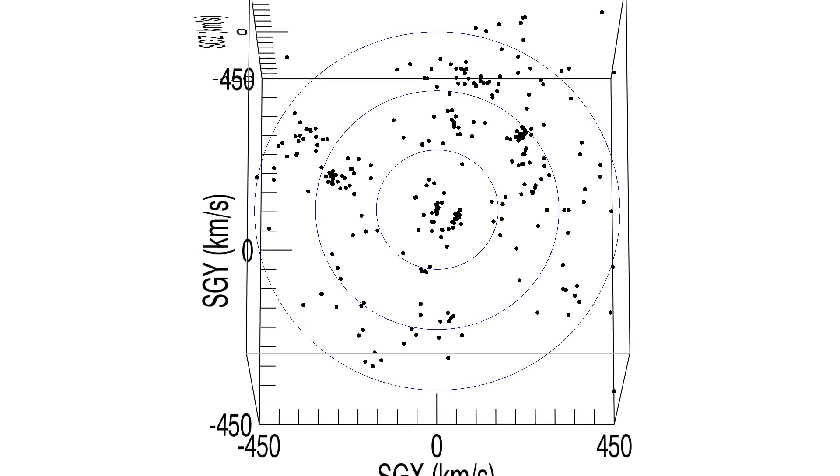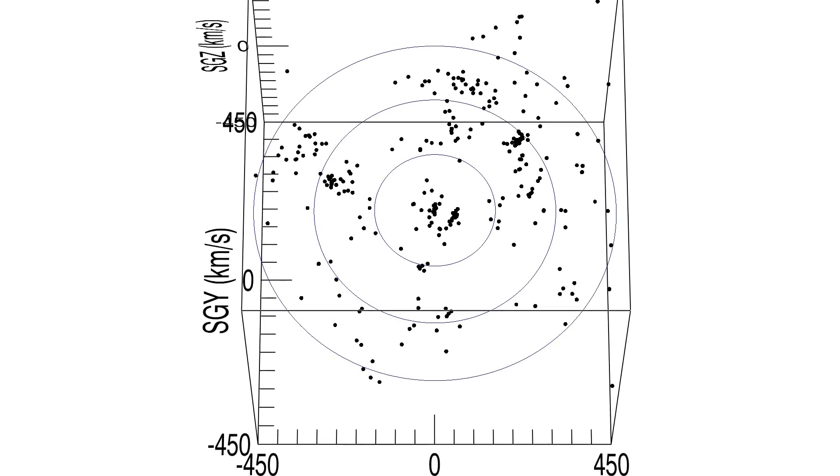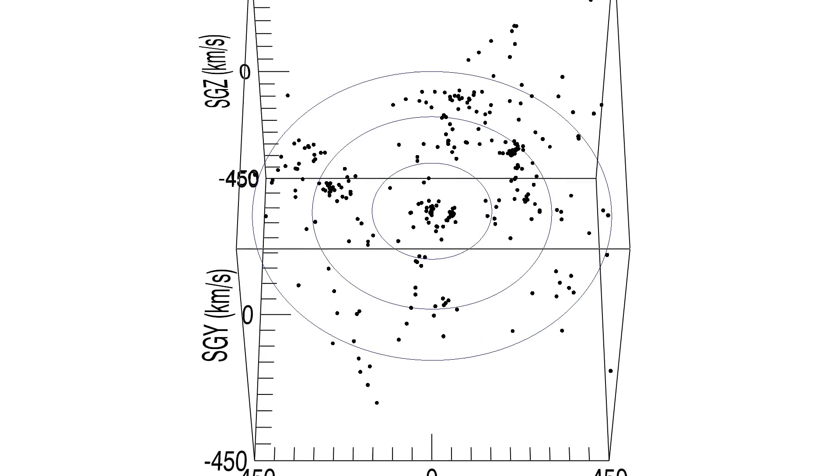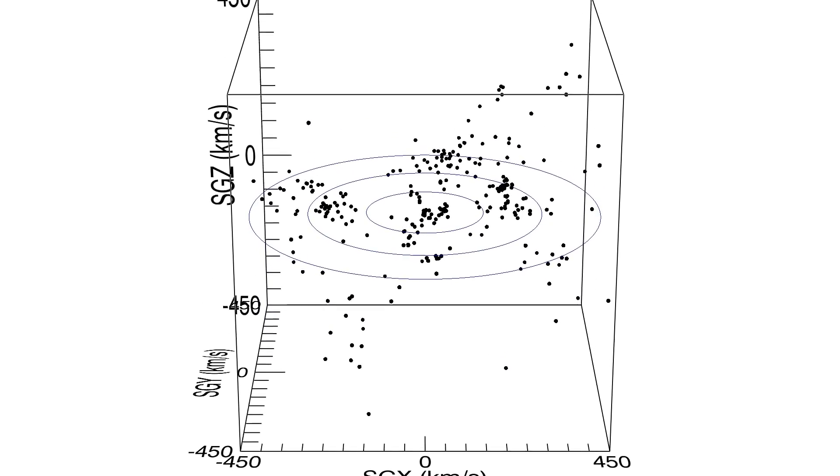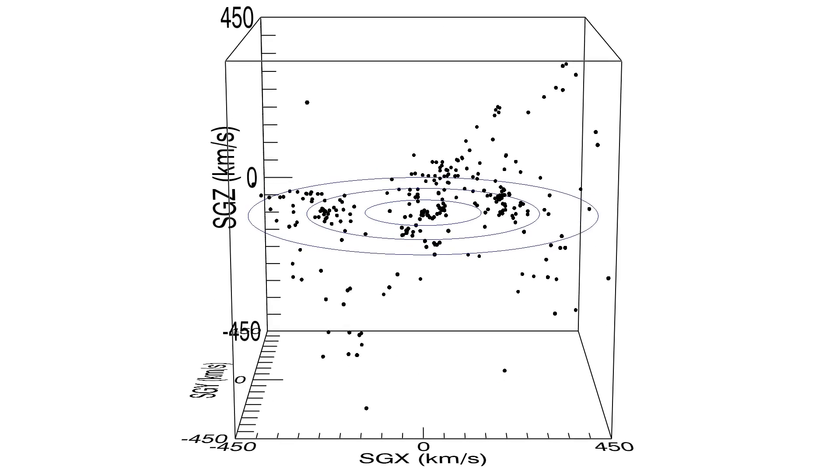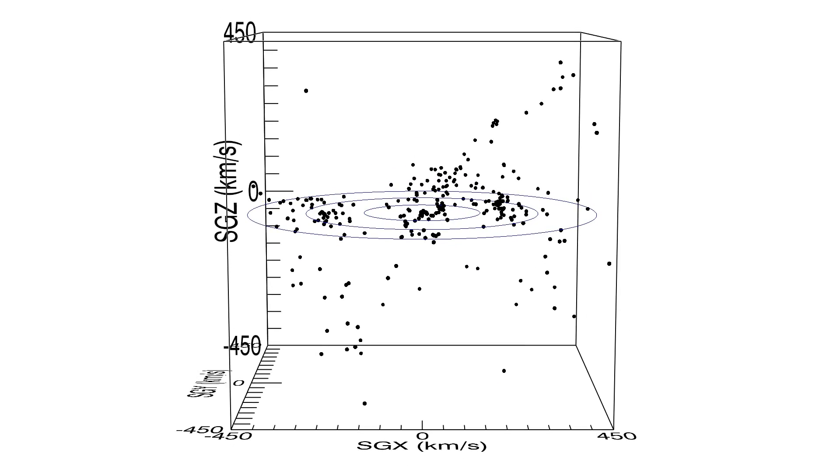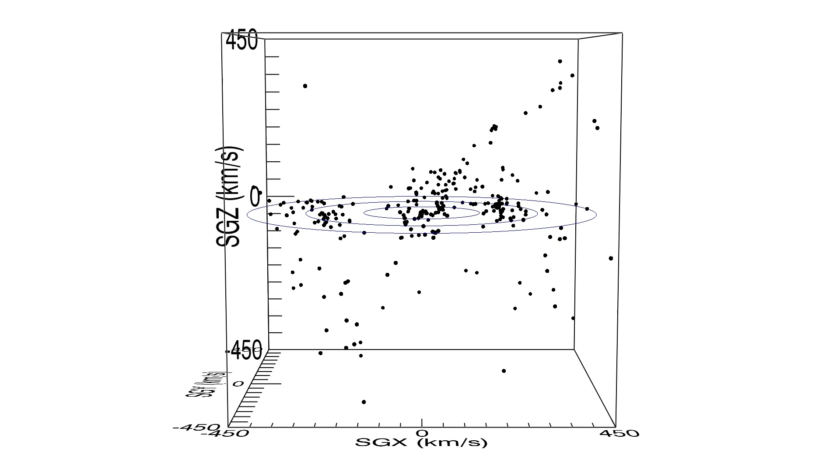The rotation of this scene allows us to see that most of the galaxies in this local cube lie in a thin plane, the equatorial plane in the supergalactic coordinate system. There is a very empty sector above this plane, the local void.